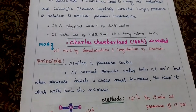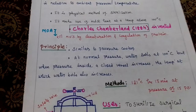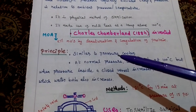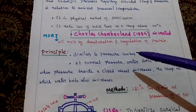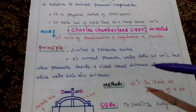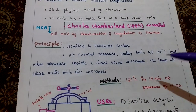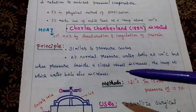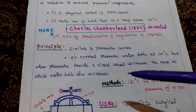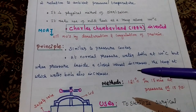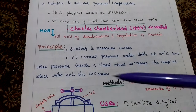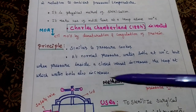Principle of autoclave. The autoclave principle is similar to the pressure cooker principle. At normal pressure, water boils at 100 degrees Celsius, but when the pressure inside a closed vessel increases, the temperature at which water boils also increases.